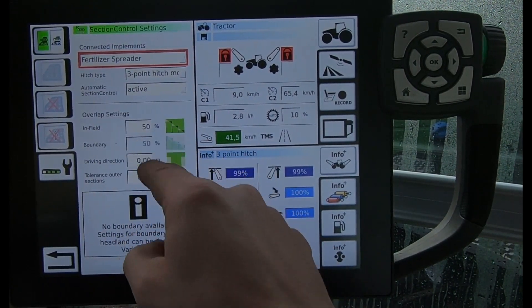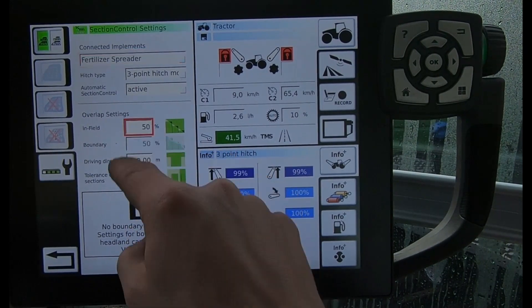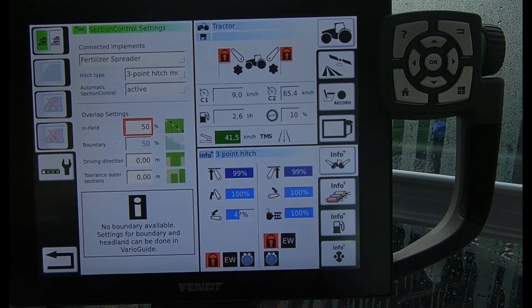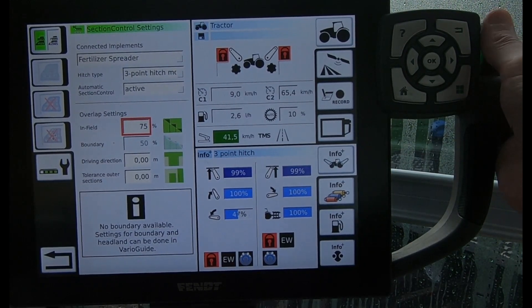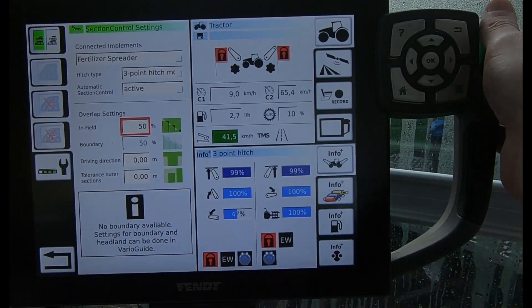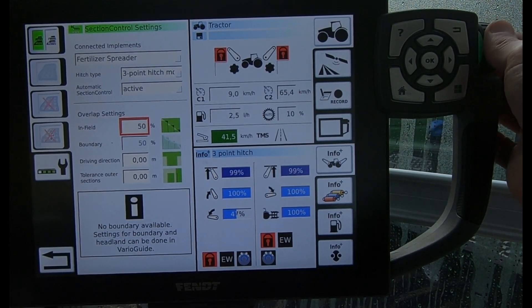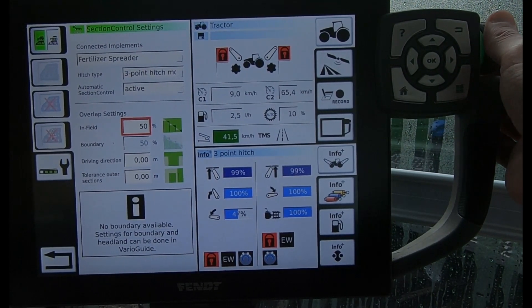Here then I'm just looking at my overlap, so my infield overlap. Am I having a zero percent overlap, fifty percent, twenty-five percent, seventy-five percent? We can scroll through there and we see just in here then how that is being altered with that one.